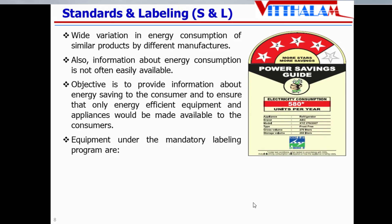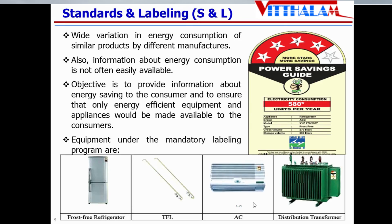The equipment presently under mandatory labeling program are frost-free refrigerators, tube lights (TFL), room air conditioners, and distribution transformers. The necessary star rating will be given — star 1 to star 5. Star 1 is the least energy efficient and star 5 is the most energy efficient. Apart from the star rating, they have to display how many units per year the equipment will consume. There are also many products under voluntary labeling, like ceiling fans, water geysers, laptops, DG sets, and washing machines — domestic appliances are also under this star and labeling program.